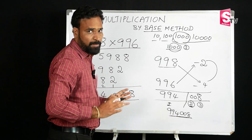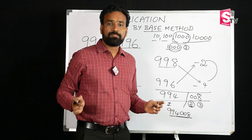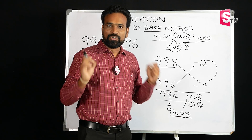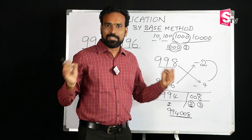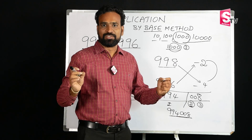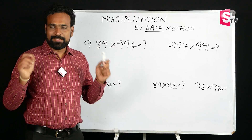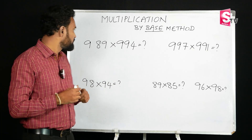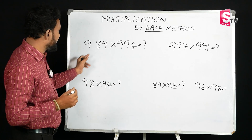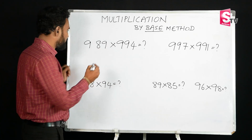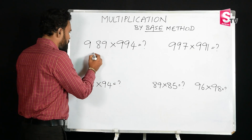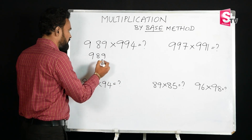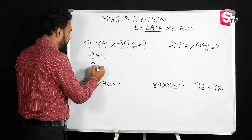You can download the app link in the description below. Please subscribe for more Vedic Mathematics. Let's take a look at another example: 989 times 994.